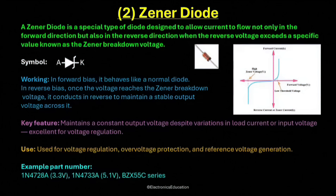But as the reverse voltage increases and reaches a particular value known as the Zener breakdown voltage, the diode suddenly starts conducting in the reverse direction. This happens without getting damaged because the diode is specially designed to handle this reverse breakdown safely. Once the Zener breakdown voltage is reached, the voltage across the diode remains almost constant, even if the current changes. This property makes the Zener diode extremely useful for voltage regulation.